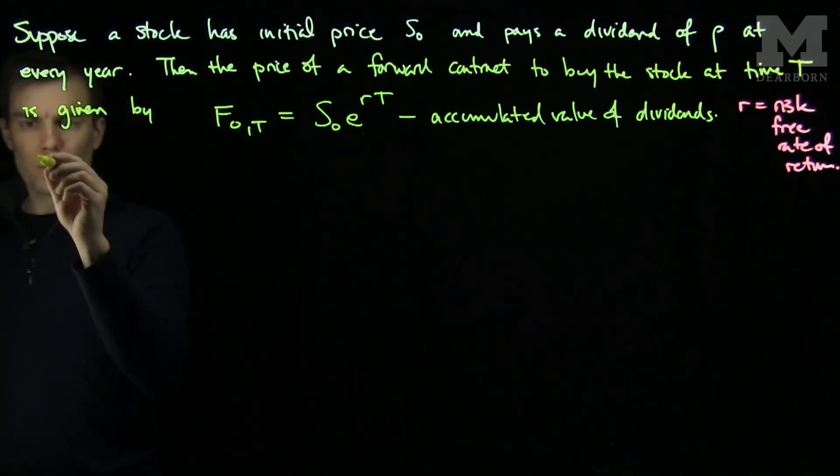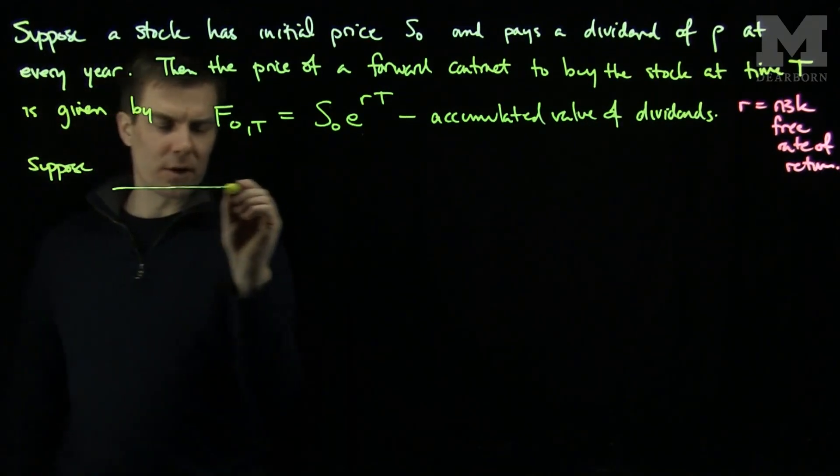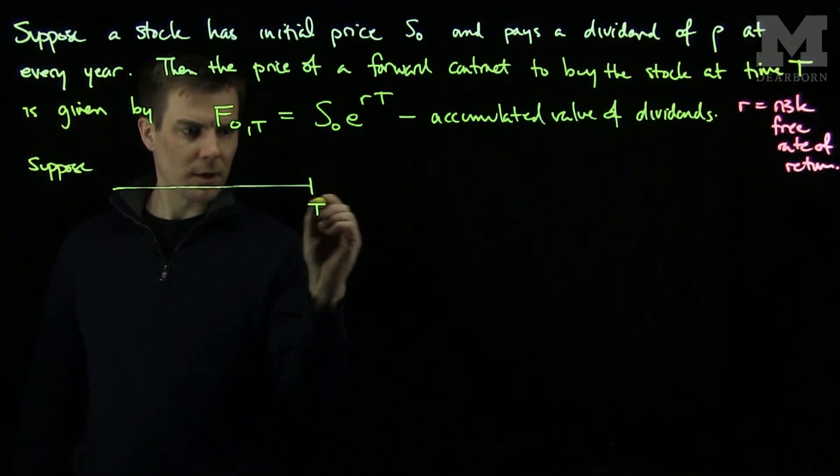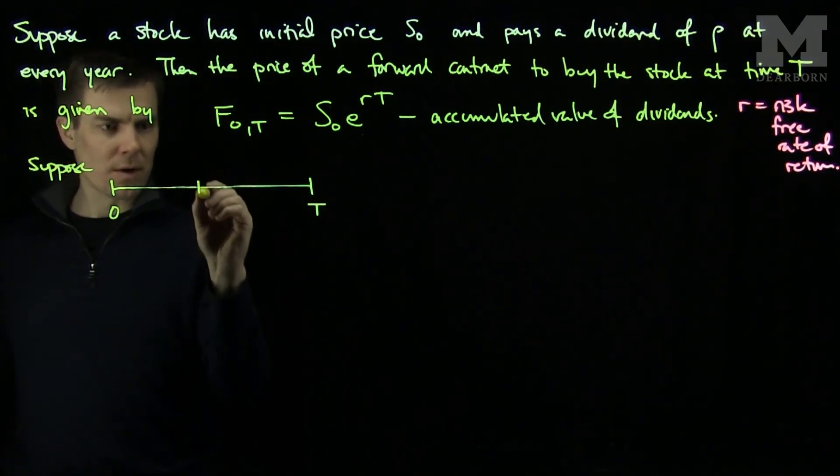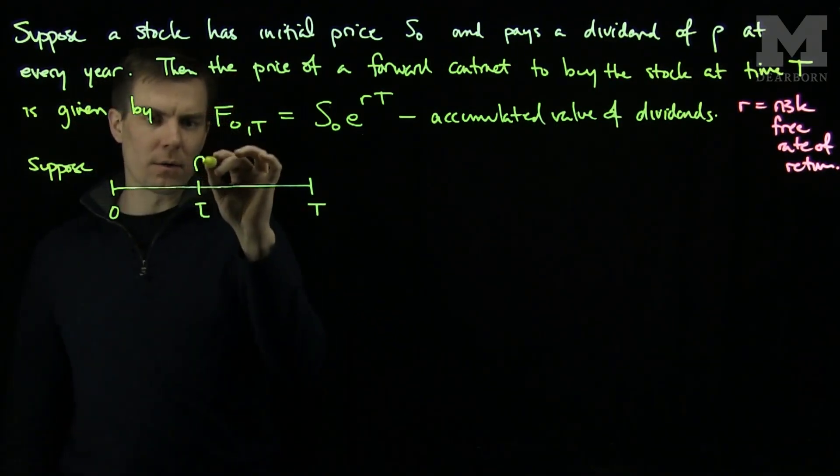Let's assume we have the following configuration. Here's time T, here's time zero, and here's time tau. And let's assume we get a dividend at time tau of rho.